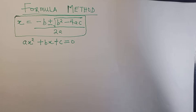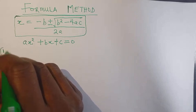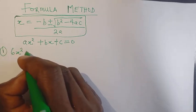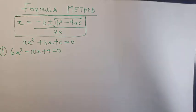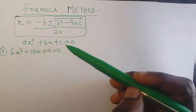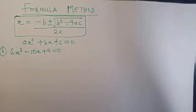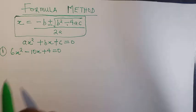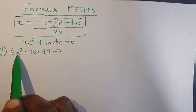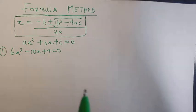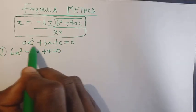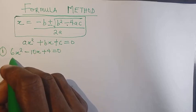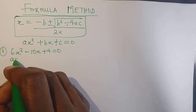We're going to take an example to show how we go about this. We want to solve 6x squared minus 10x plus 4 equals to 0. If you haven't seen the video where we derived this formula, check the quadratic equations playlist. Comparing our equation with the general representation, we can see that a is 6, b is minus 10, and c is 4.